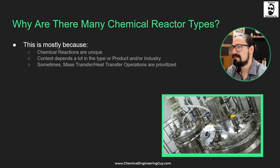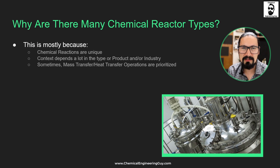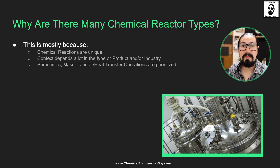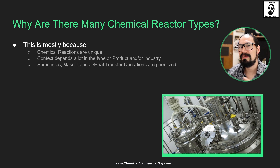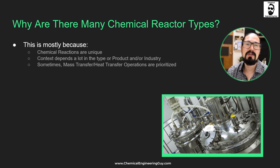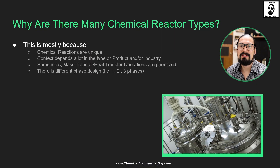Sometimes mass transfer and heat transfer operations may be prioritized — we may have full control of the reactor, but separation downstream gets complicated. Or we know that very high temperatures would maximize yield or productivity, but technically it may not be feasible, and from a safety and hazards standpoint, operating at high temperatures doesn't always make sense. Gas formation, liquid formation, disappearance of a phase, or formation of solids and crystals may all affect reactor selection.